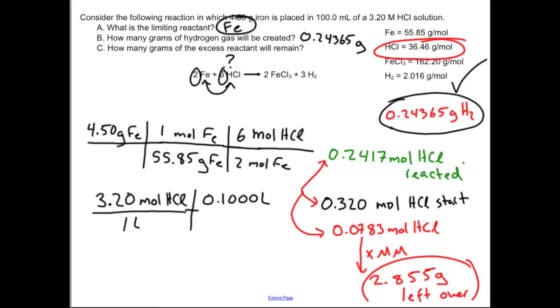The big take home message for any problem like this really is in just keeping track of what is going on. That is why I am so insistent that people need to actually label moles or grams of what species. It will really help. And also just keeping the big global picture of what is going on with the stoichiometry problem like that diagram I drew up for you. Hopefully this problem made sense to you. And if it did, you should let your computer know.